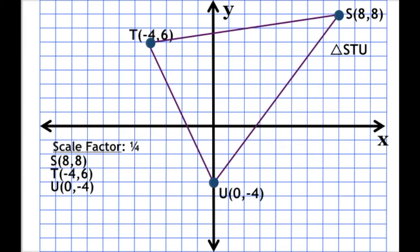Number 5 we'll see on the next page. We have triangle STU, where S is at (8, 8), T is at (-4, 6), and U is at (0, -4). Our scale factor is one fourth, so our figure is going to be smaller. S prime is going to be 8 times one fourth and 8 times one fourth. 8 times one fourth is 2, so S prime is at (2, 2). T is at (-4, 6), so T prime is at negative 4 times one fourth and 6 times one fourth, giving us T prime at (-1, 1.5).